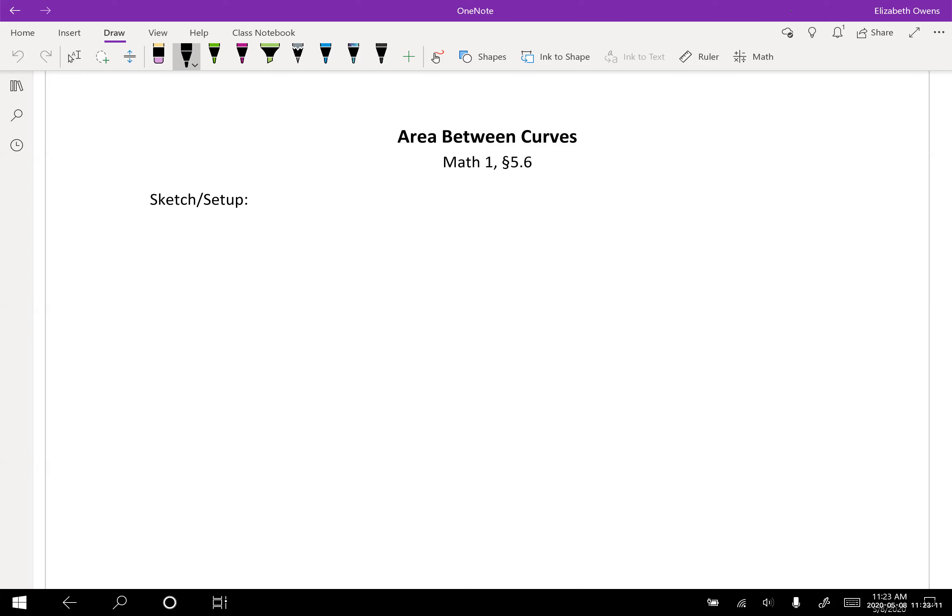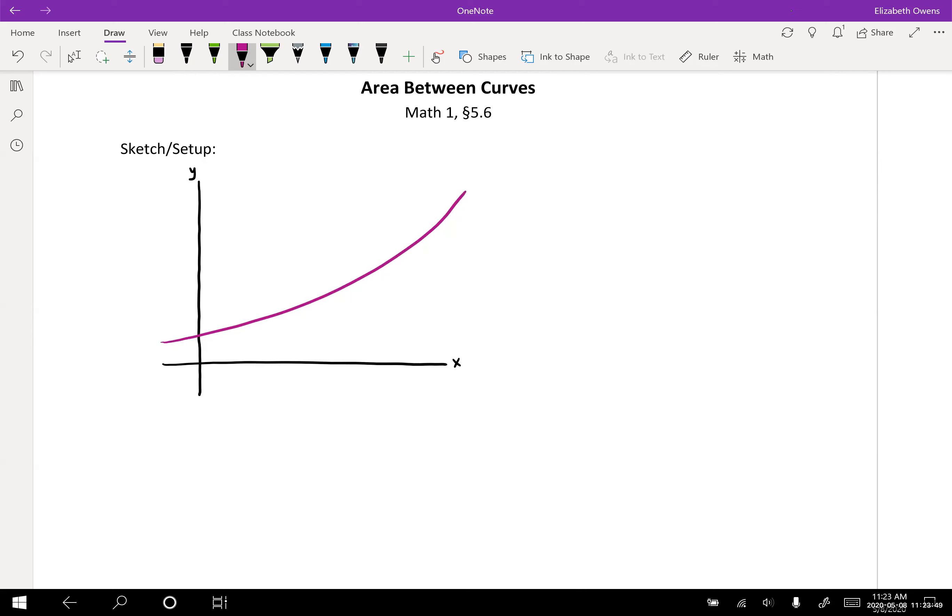First thing we're going to look at is how to set up this formula and we're going to make a little sketch to help us see what's going on here. So we want to sketch ourselves some axes, just standard x, y axes. And then we want to put two curves on there so we can find the area between them. So draw yourself some curves. There's one of my curves and here is the other one. So these are two different functions here.